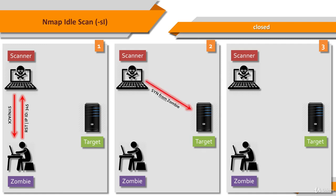The second step is to forge a SYN packet from the zombie to the target system. The target sends a RST because the port is closed, in response to the SYN that appears to come from the zombie. The zombie ignores the unexpected RST, so its IPID does not change.